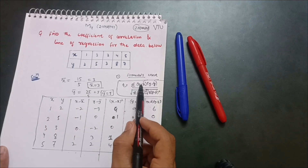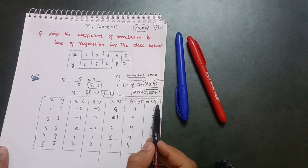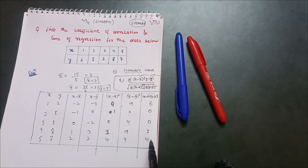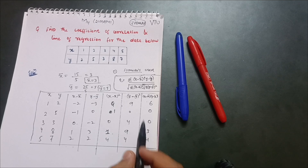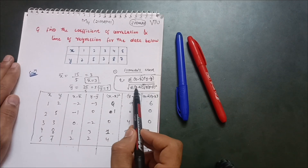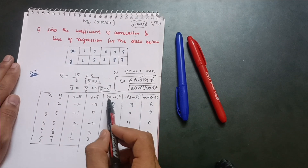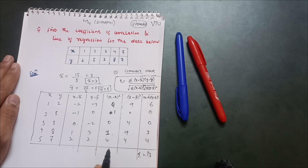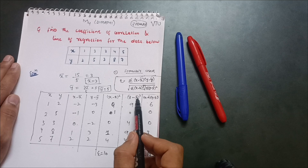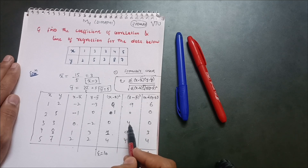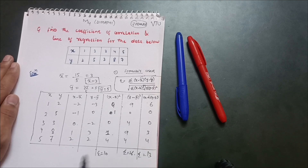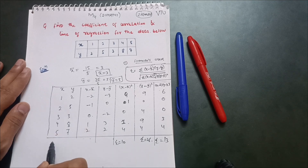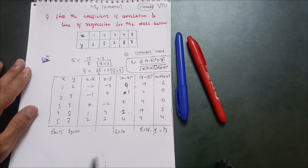Now compute the summations: Σ(x minus x̄)(y minus ȳ) = 6+0+0+3+4 = 13. Σ(x minus x̄)² = 4+1+0+1+4 = 10. Σ(y minus ȳ)² = 9+0+4+9+4 = 26. Also Σx = 15 and Σy = 25.